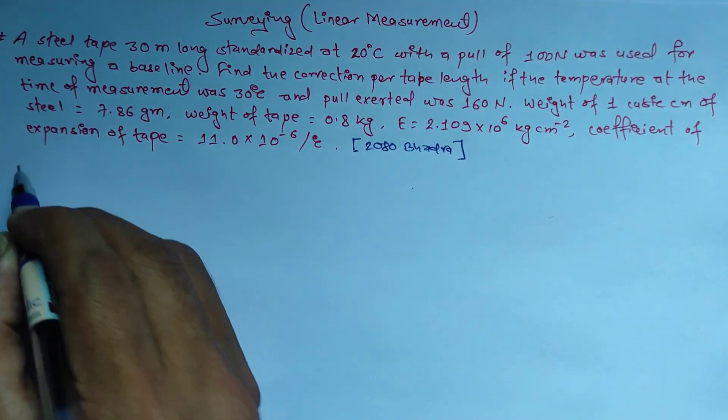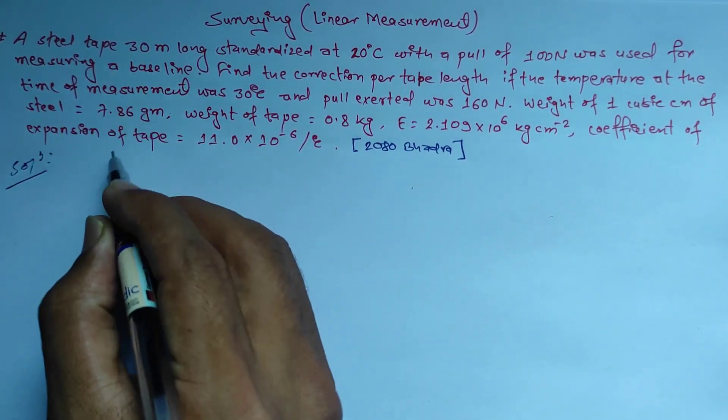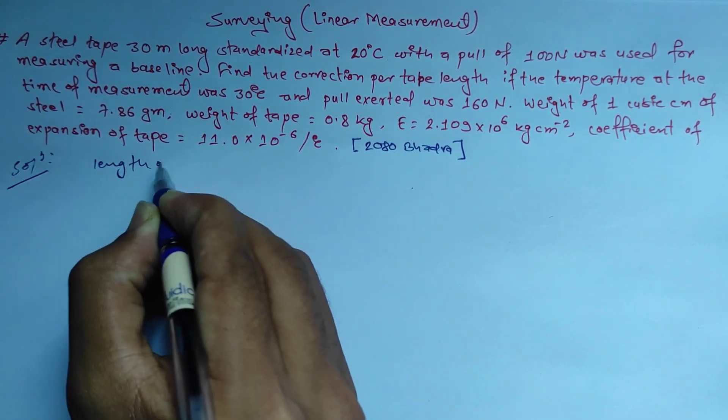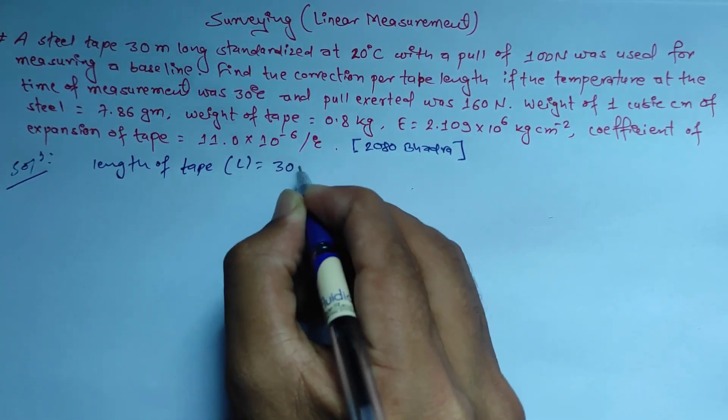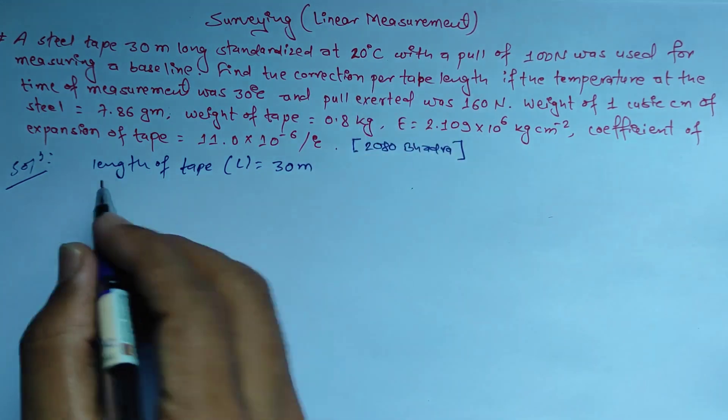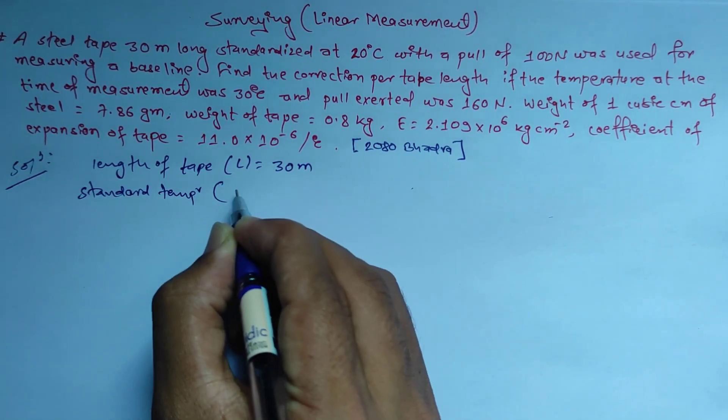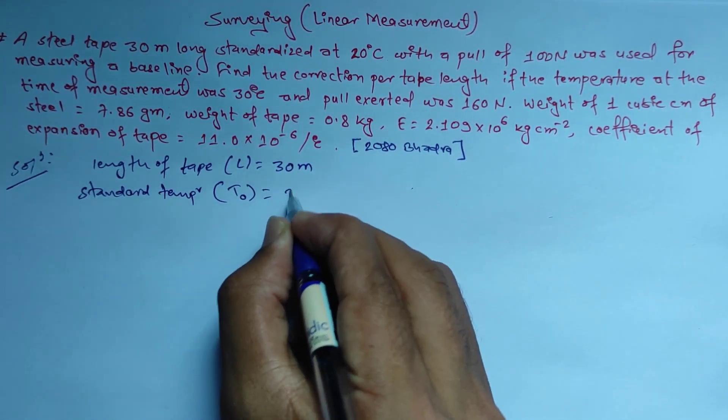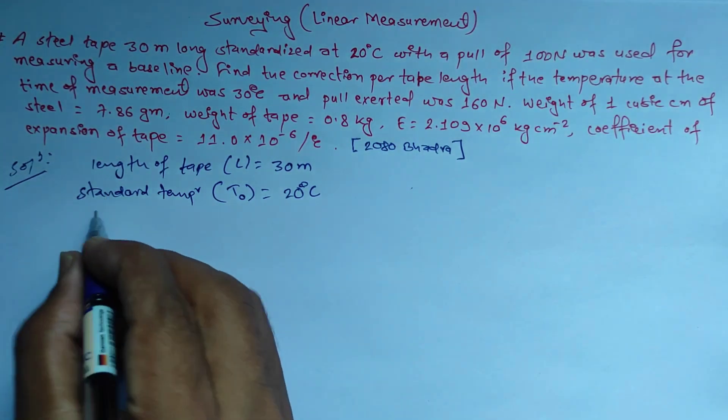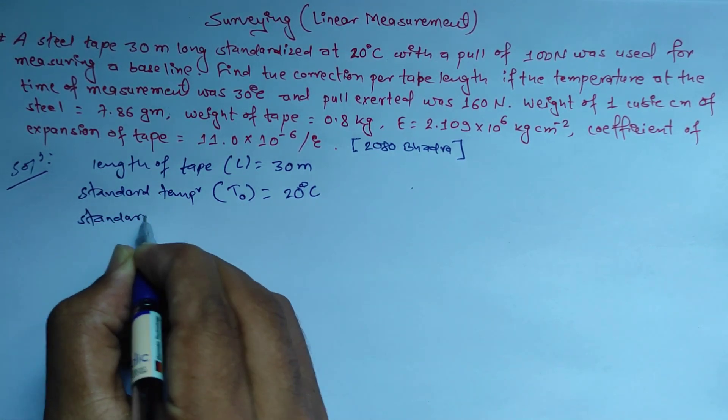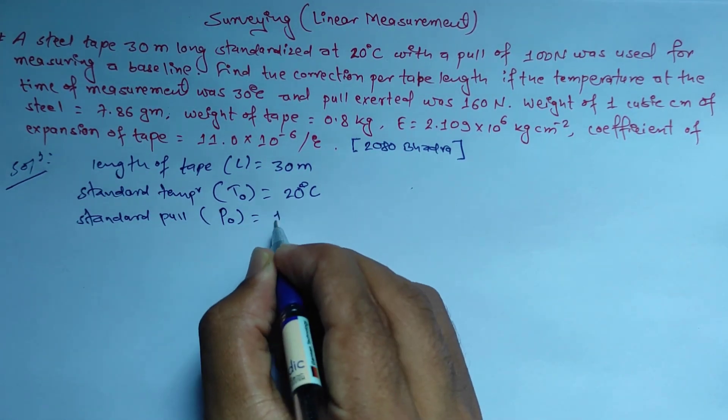So we can see the given data. Length of tape L equals 30 meters. Standard temperature T naught equals 20 degrees Celsius. Standard pull P naught equals 100 Newton.